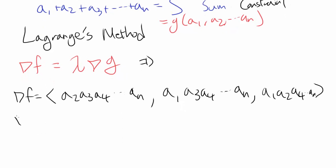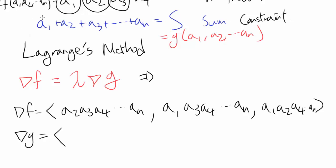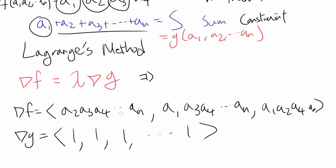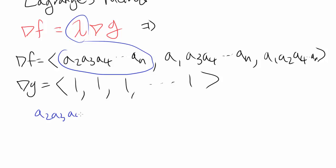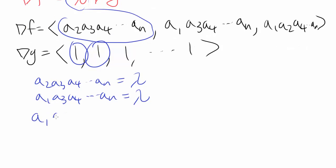Now, what is the gradient of g? The gradient of g is actually pretty simple. When you partially differentiate with respect to A₁, you get 1; with respect to A₂, you get 1, and so on — you have n ones. So each of these terms of the gradient of f is equal to the Lagrange constant lambda times 1. So we have: A₂ · A₃ · A₄ · ... · Aₙ = lambda, and A₁ · A₃ · A₄ · ... · Aₙ = lambda, and A₁ · A₂ · A₄ · ... · Aₙ = lambda, and this goes on for all n equations.